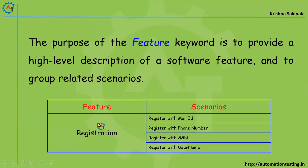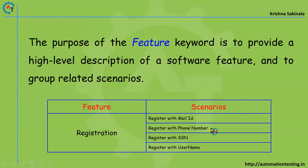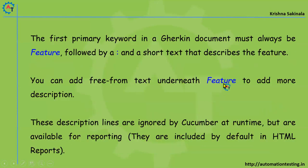Features include things like registration, login, and so on. Inside your application you will have different features you are planning to implement. For example, registration is one of the features in your application, and under that you will have multiple scenarios. Some examples are: register with mail ID, register with phone number, register with SSL, and register with username — these are different scenarios under the registration feature.